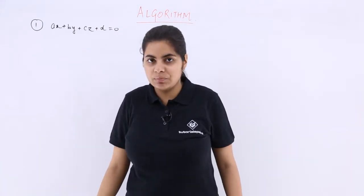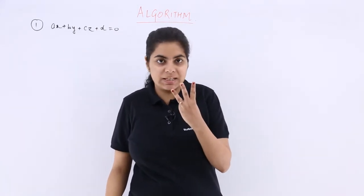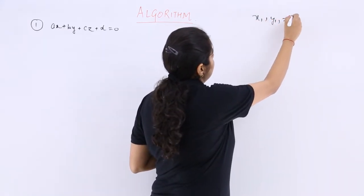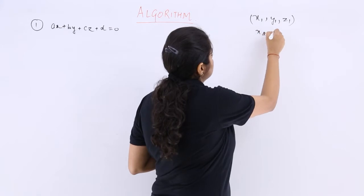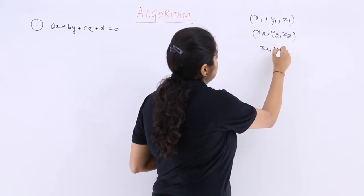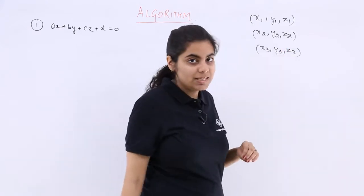Now if this is the general equation of a plane and I know that 3 points are given to me, the first point being x1, y1, z1, the second point being x2, y2, z2, and the third point being x3, y3, z3. So these are the 3 points.